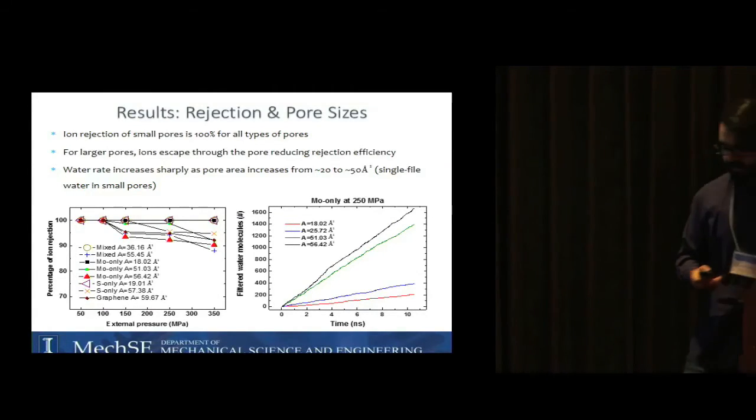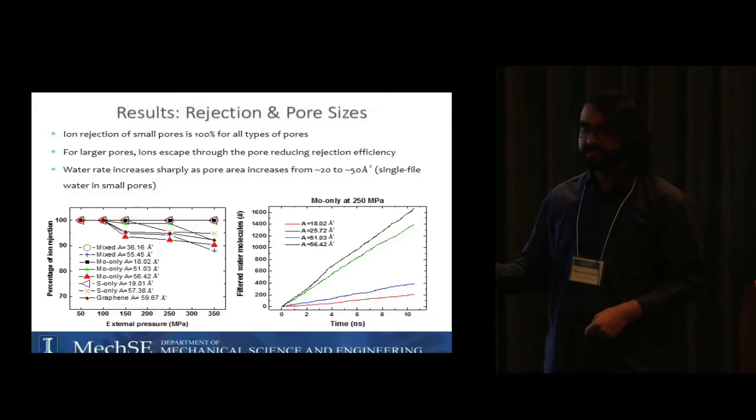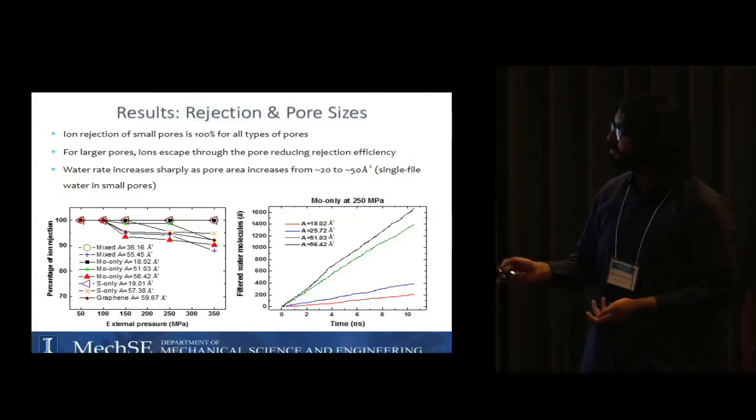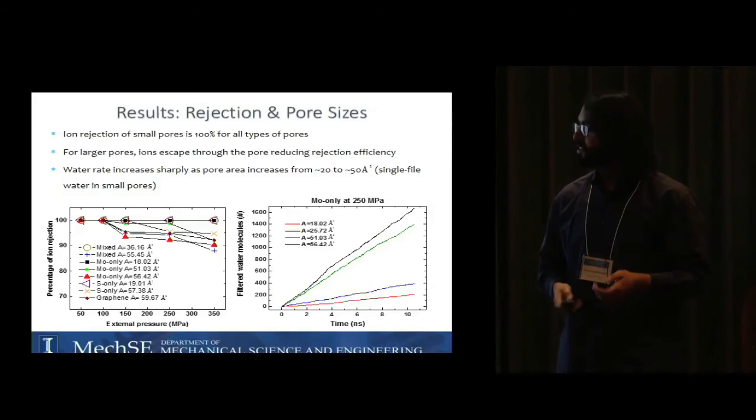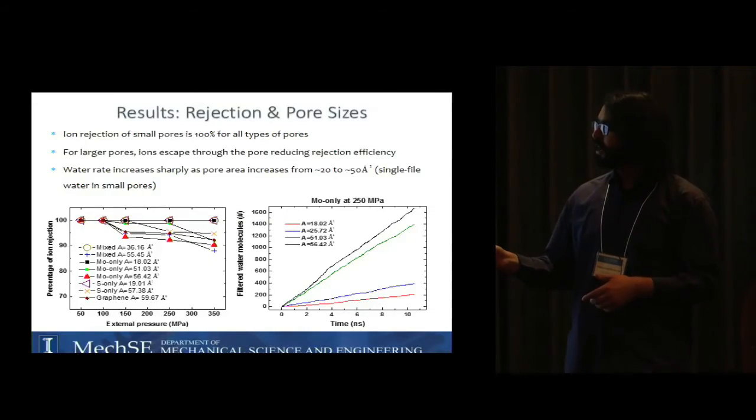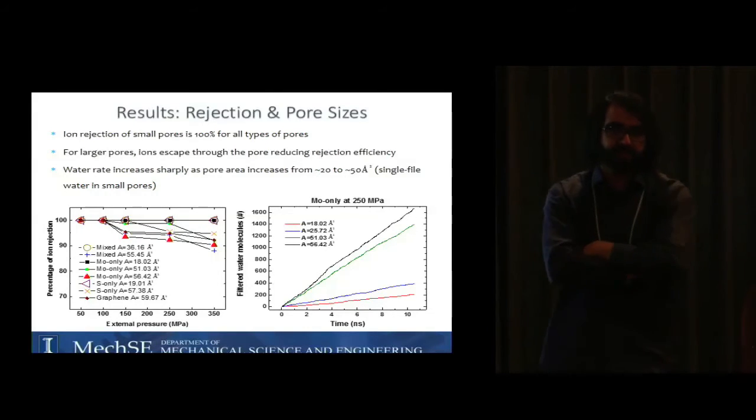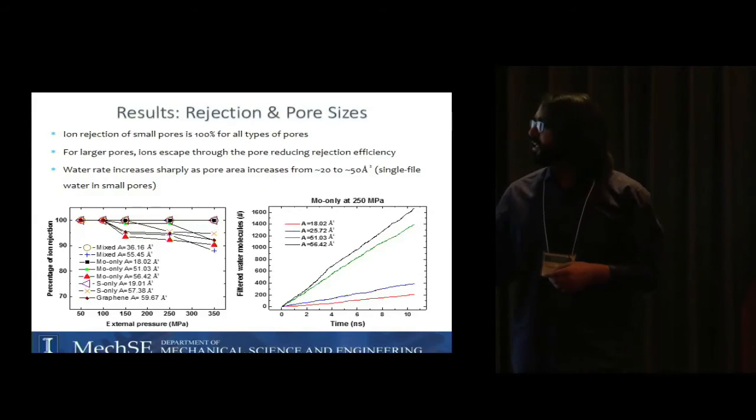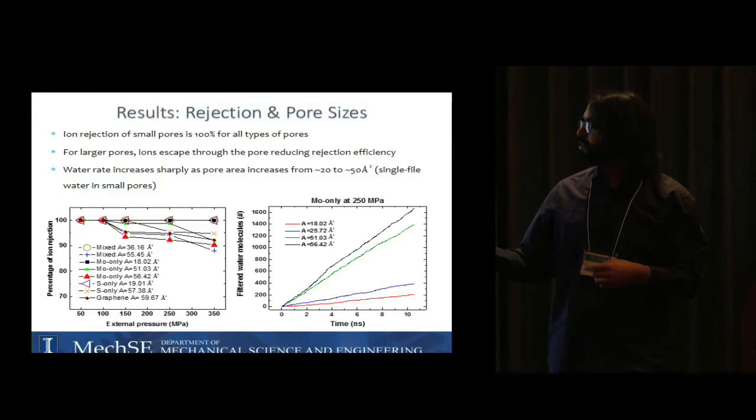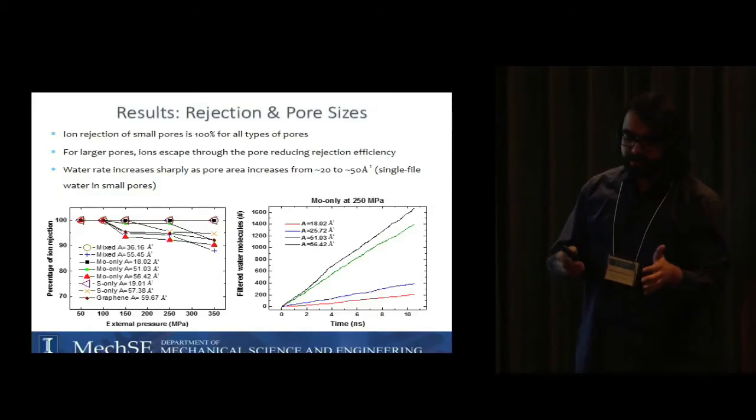The first thing that we looked at was the percentage of ion rejection for different pore types: mix, Mo only, S only, and graphene for different pore areas. Here I have pore areas ranging from 20 angstrom squared to 50, 60 angstrom squared. As you can see, for very tiny pores of order of 20 angstrom squared the rejection percentage is almost perfect, that's 100%, and that's obvious. As you increase that nanopore size, the ions start to go through and your rejection will go down.